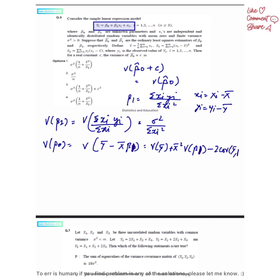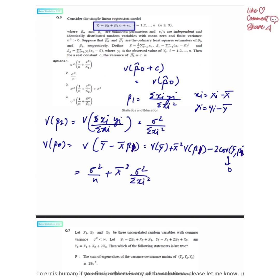Beta-0 equals y-bar minus x-bar times beta-1, and the covariance between y-bar and beta-1 is equal to 0. So variance of beta-0 equals sigma squared upon n plus x-bar squared times sigma squared upon summation x_i squared, which is the required answer.